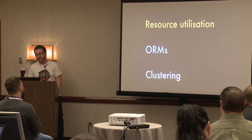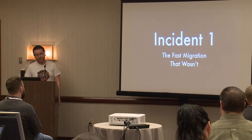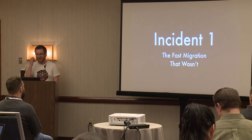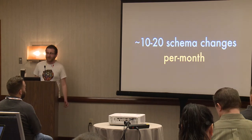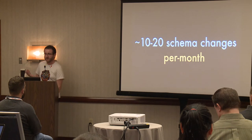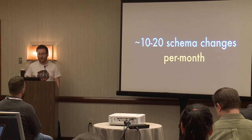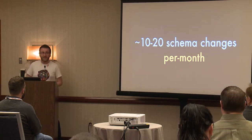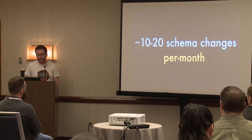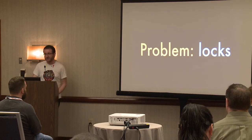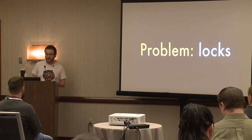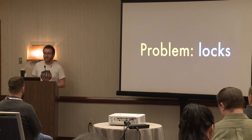Let's get started by talking about running out of resources. Incident number one: the fast migration that wasn't fast. This was the first time I caused a complete outage of GoCardless in production. We make roughly 10 to 20 schema changes per month — everything from creating a new table, adding a column, or adding an index to fix a performance issue. The problem with schema changes is that they typically hold exclusive locks. They need to modify the actual structures of the database, and they need nothing else touching those structures while they do it. If you have exclusive locks that are long held, nothing else can use your database.